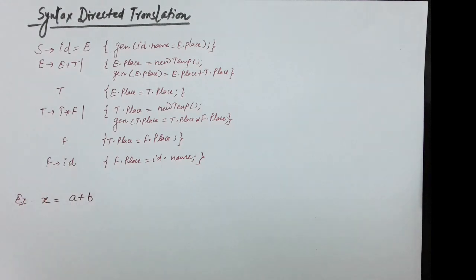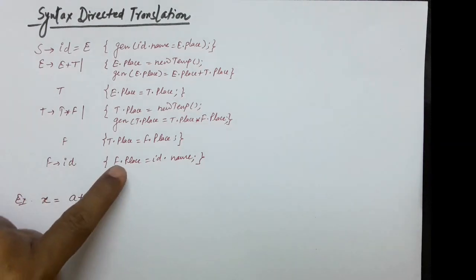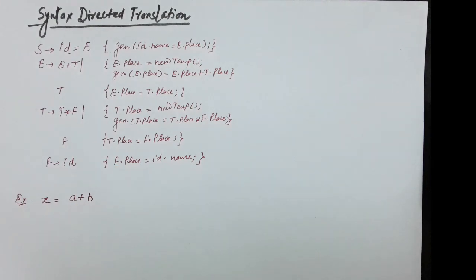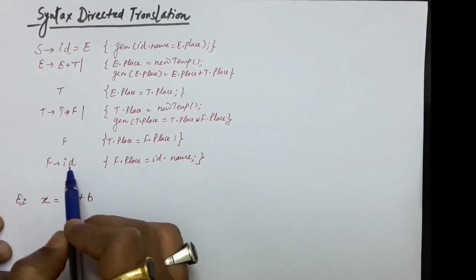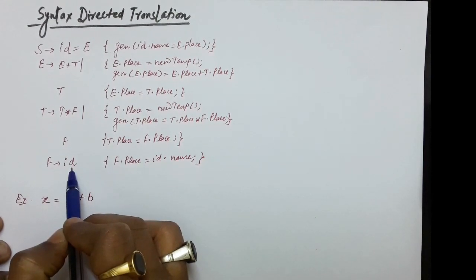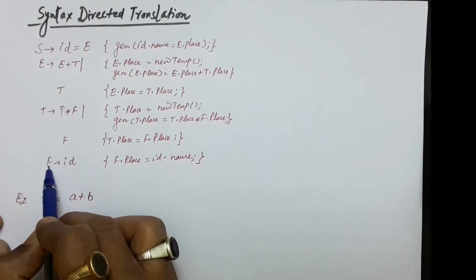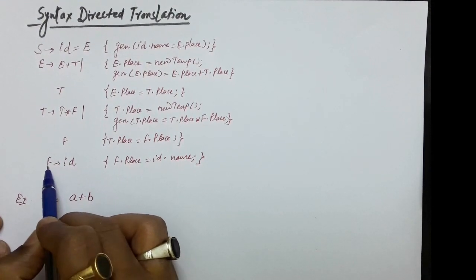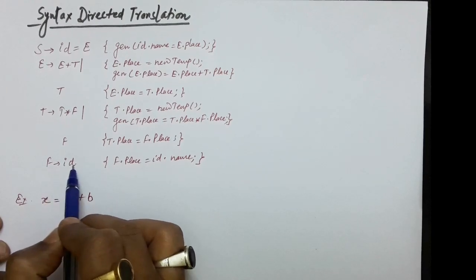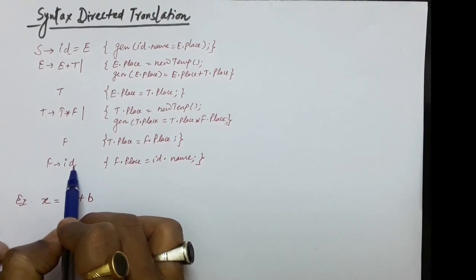Now about 'place' — this is actually the attribute associated with a non-terminal variable. It means it stores a value. For example, if F produces id is a production, then whatever is the lexical value or name of this id is stored in the place attribute of F. So in F as an attribute we are storing the name of whatever this id is.